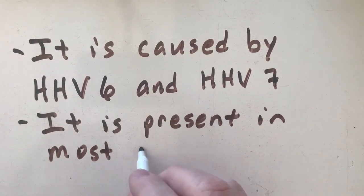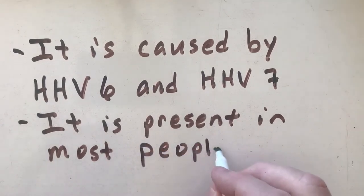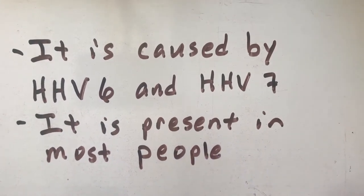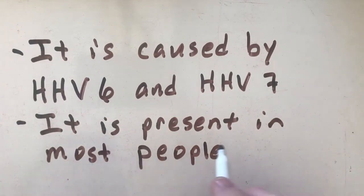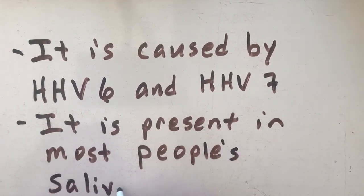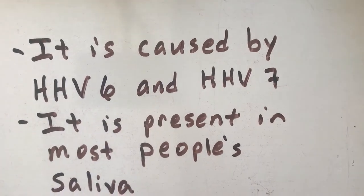Herpes gets a bad reputation, and people make jokes about it, but there are seven types of herpes we've covered and six of them — most of the population will have. It's present in most people's saliva. So every time you hear about herpes, it's got this bad stigma, but most people have most types of herpes anyway.